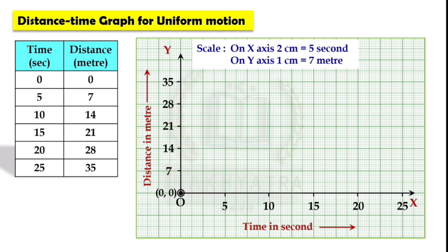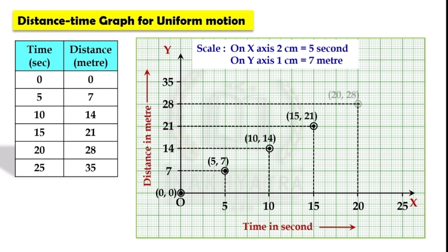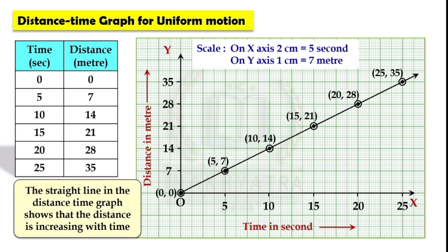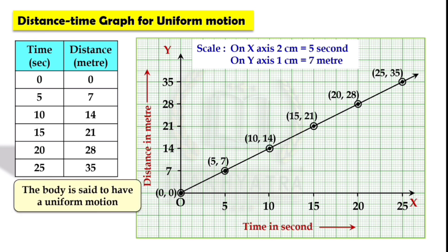Now plot the points. Here the abscissa and ordinate are marked. After plotting and joining the points we get a straight line, so the graph is a linear graph. We can say that the straight line in the distance-time graph shows that distance is increasing with time, so the body is said to have uniform motion.